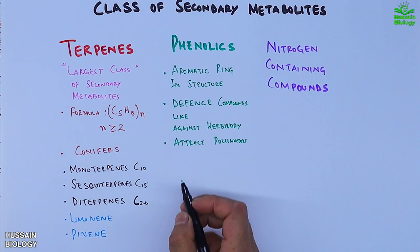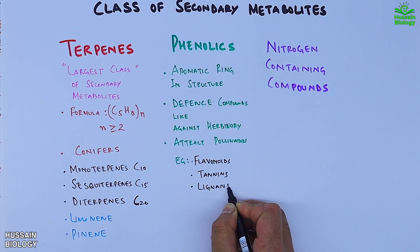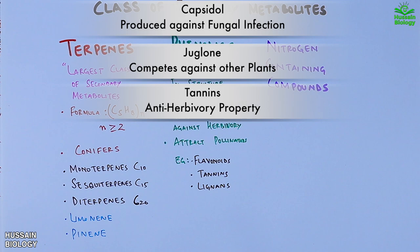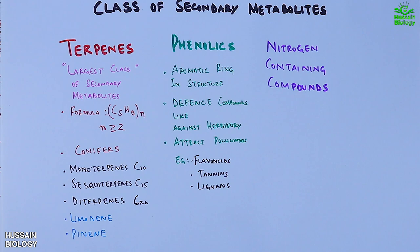Some common examples are flavonoids, tannins and lignans. In peppers we have capsidol phenol compound. The walnut tree produces juglone which inhibits competing plants and we have tannins produced by oak tree that have anti-herbivory property.